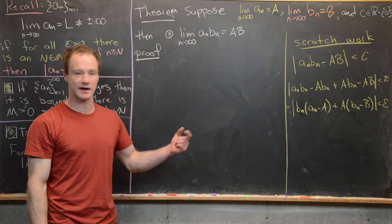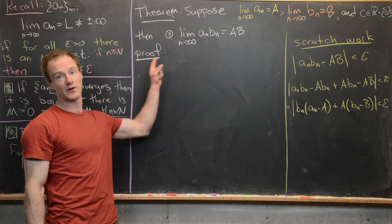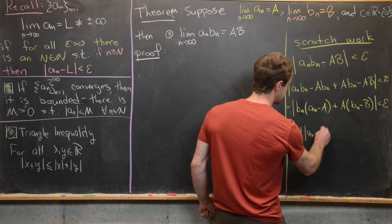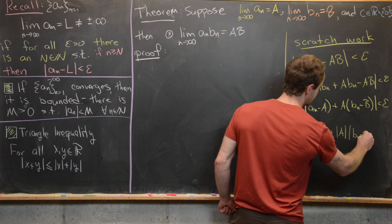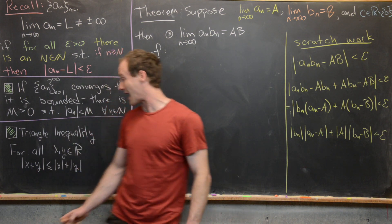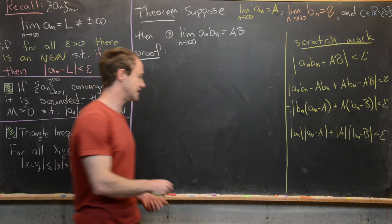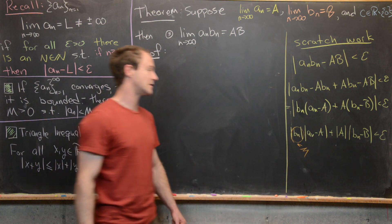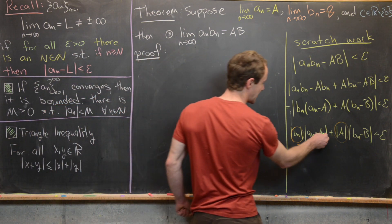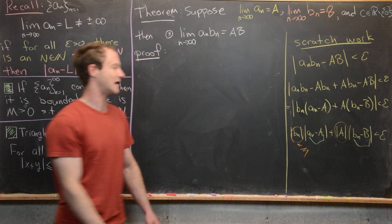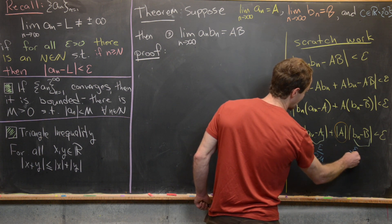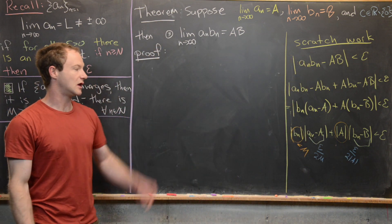Applying the triangle inequality: |bₙ|·|aₙ − a| + |a|·|bₙ − b| < epsilon. Since bₙ converges, it is bounded by some M > 0. We can make |aₙ − a| < epsilon/(2M) and |bₙ − b| < epsilon/(2|a|), so that M·(epsilon/2M) + |a|·(epsilon/2|a|) = epsilon/2 + epsilon/2 = epsilon.